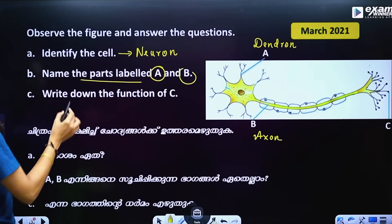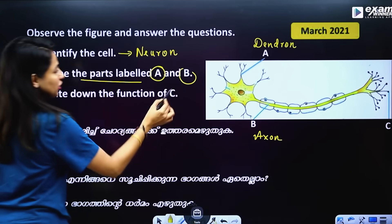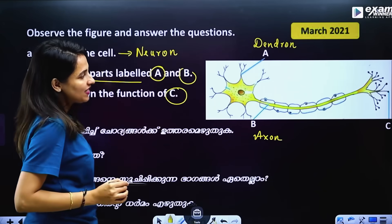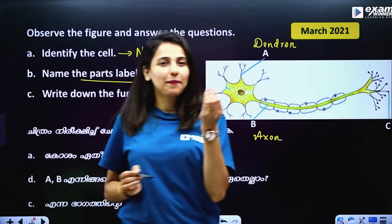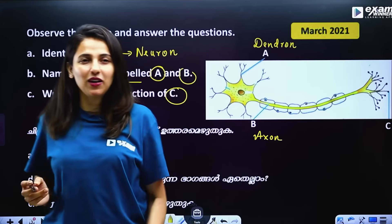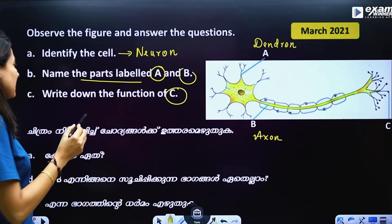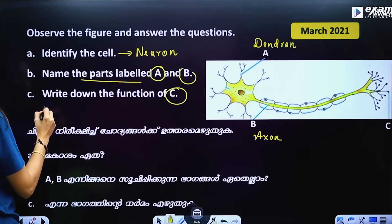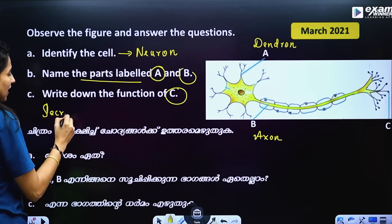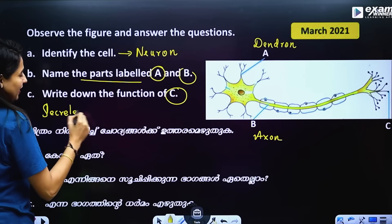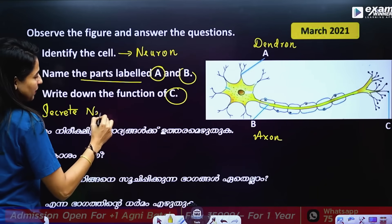Write down the function of C. What is the function of C? In the tip of the bulb, we call it C. The function of C is to secrete Neurotransmitters.